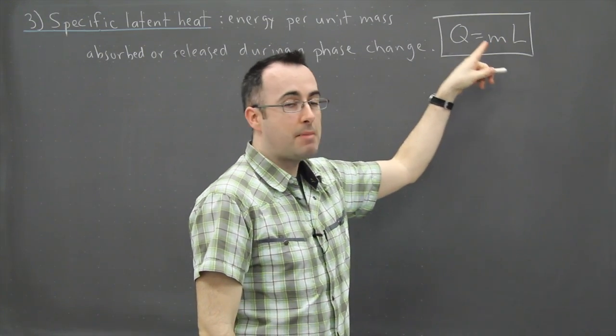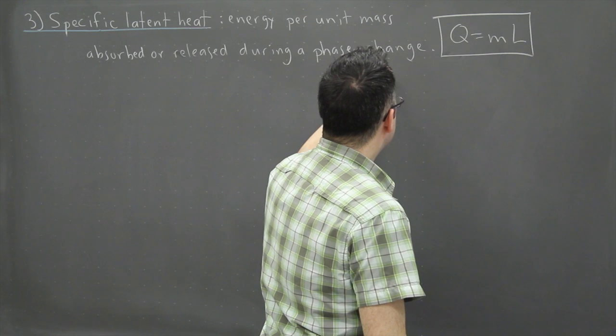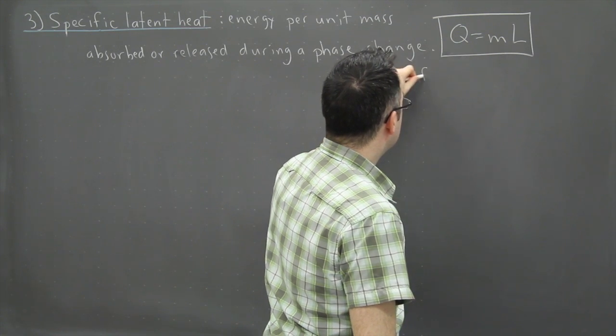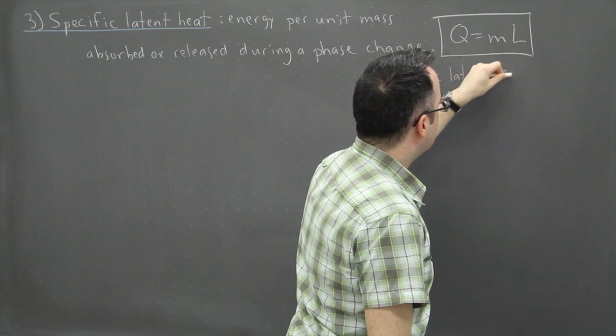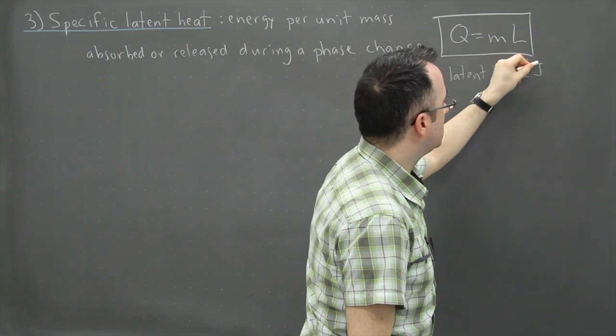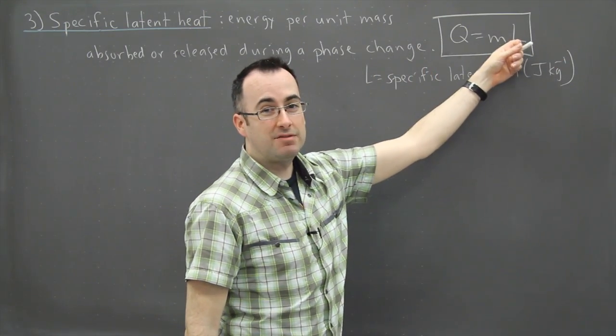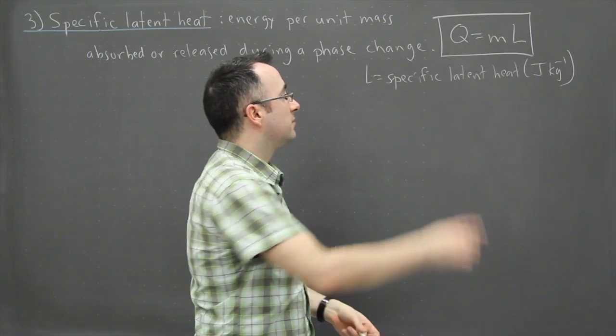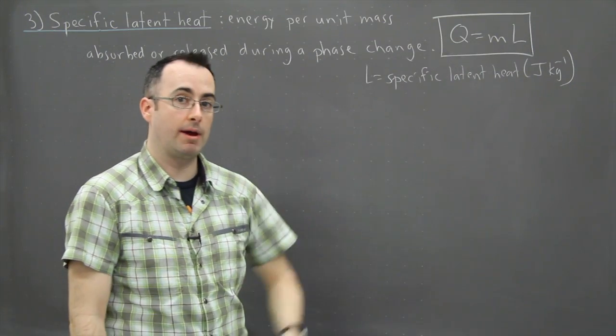M is still the mass which is measured in kilograms, so L then is this specific latent heat. If it's by itself you'd have Q over M, so specific latent heat would be joules per kilogram.